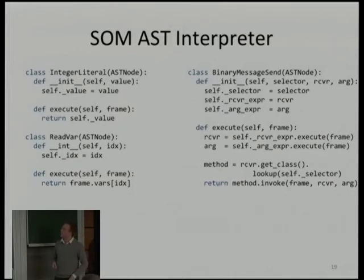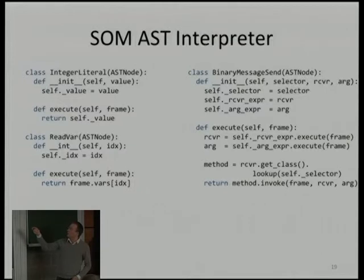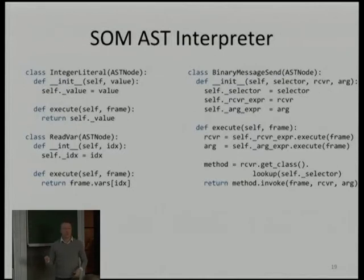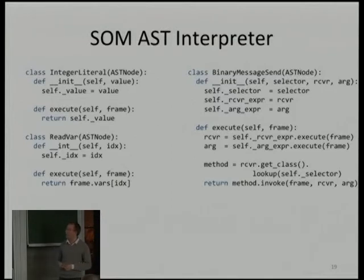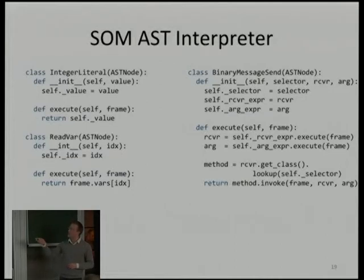For a message send in the AST interpreter: you simply execute the receiver expression, execute the argument expression, and here you don't have to encode the stack explicitly — you can reuse the stack of your implementation language, with just a receiver and argument variable in your code. You don't have to think about stack balance, what to push first, what to push later. Then you go to the receiver, get its class, do a lookup with the selector, and return the result. That seems to be a much more natural and simple way to implement an interpreter.